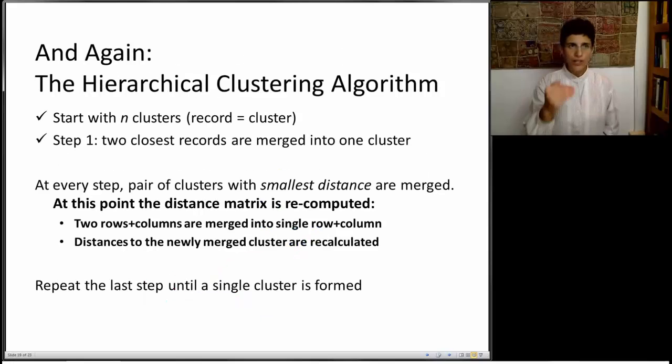We already went through the step of combining the closest two records, and now, from now on, what we're going to do is we're going to have to recompute our distance matrix every time we combine two clusters together. And we're going to keep doing that over and over and over again until at the very end we're left with one big cluster, which has all of the records together in that same cluster. Of course, we might use earlier stages where we had a small number of clusters to derive insight.